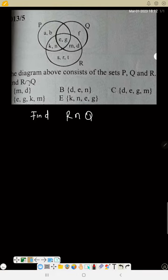If you look at the diagram very well, you will see we have two circles like this. Here is R, here is Q. You will notice that this middle is R intersection Q. Now look at it in the diagram.